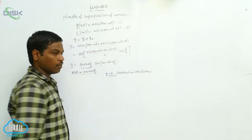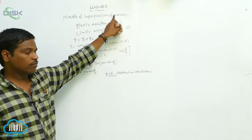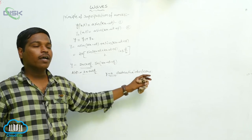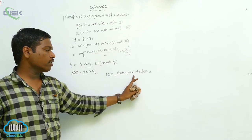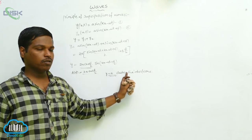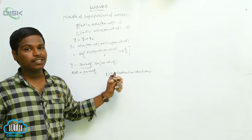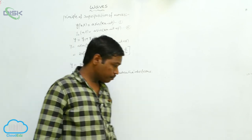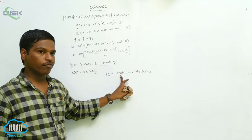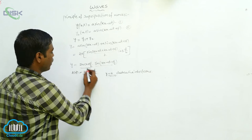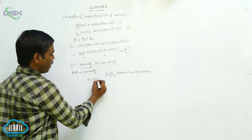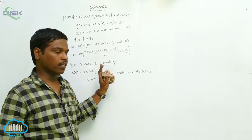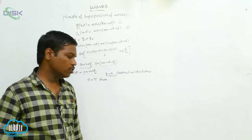In the case of superposition of waves we get two types of interference: constructive interference and destructive interference. Destructive interference is where the resultant displacement is 0. The resultant displacement is maximum when the phase angle φ equals π, and that maximum displacement is called constructive interference.